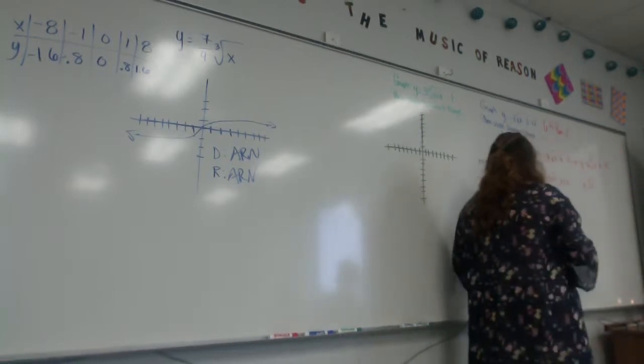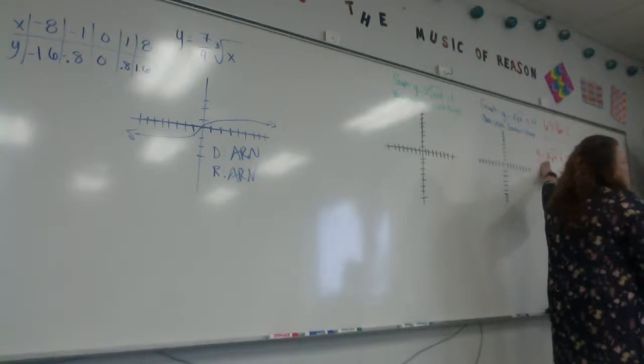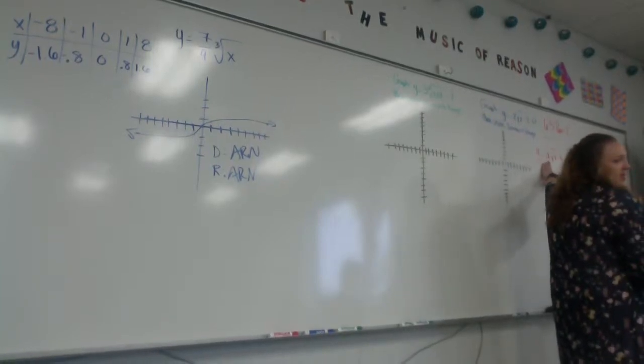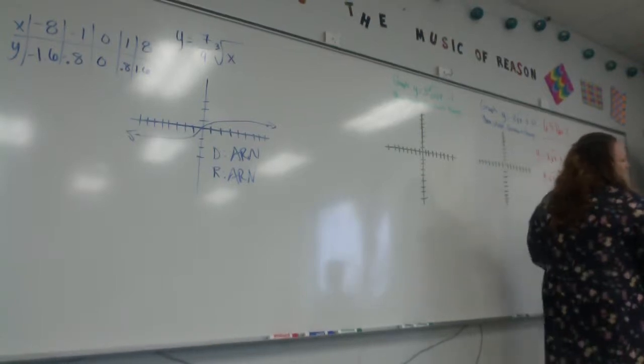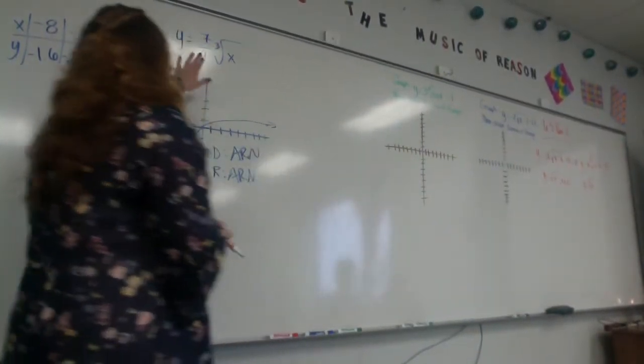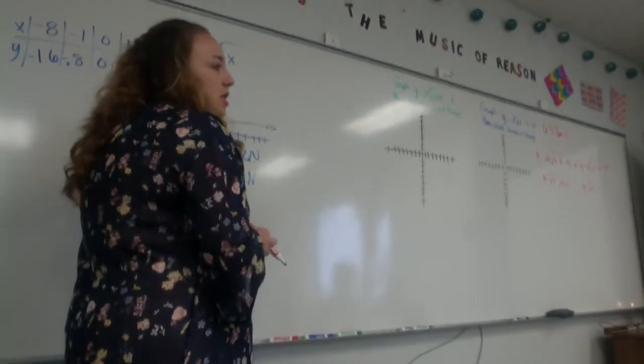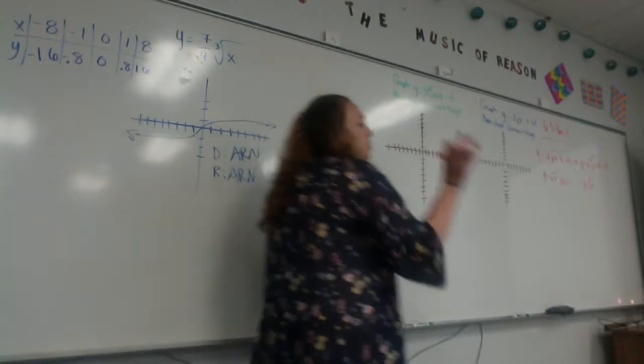Now we're working where we have this h and k and the a in it. The a is easy because we actually did that yesterday. What number would be the a that we had yesterday? What would be an example of something that could be my a? What does my a do? Yeah, Drew, you're right. It stretches, it shrinks it, or it flips it. So the a does that. We're used to working with a.